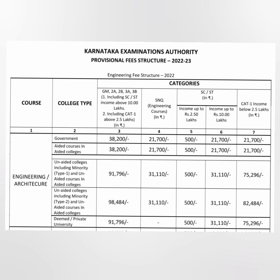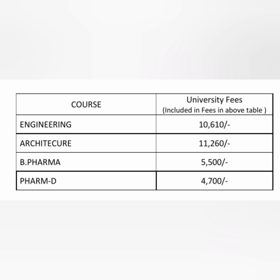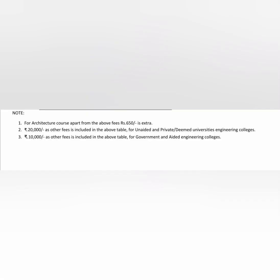Apart from these, there is an additional university fee for every course. For engineering, the university fee going to VTU (Visvesvaraya Technological University) is 10,610. For architecture it is 11,260, for B.Pharma it is 5,500, and for Pharma it is 4,700. A special note at the bottom of the table states that architecture students have an extra 650 rupees. Also, 20,000 as other fees in unaided or private deemed universities is already included in the main table, as is a 10,000 additional fee for government and aided engineering colleges — no extra payment is needed.